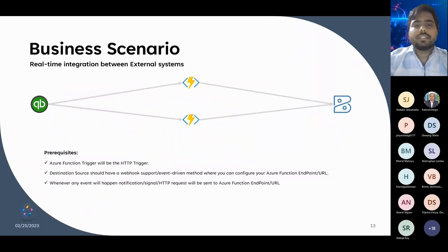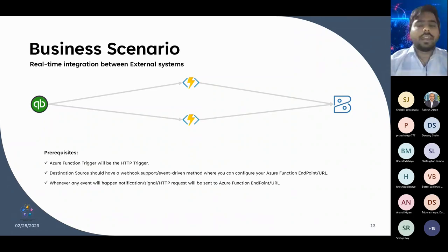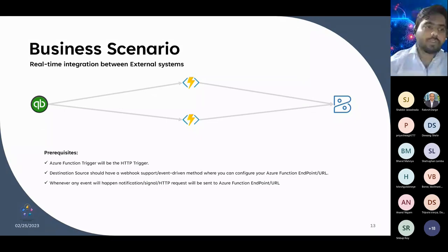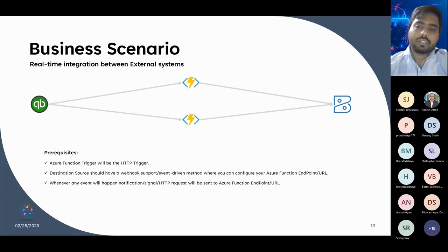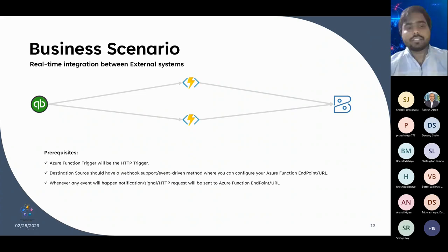The second business scenario: you don't have Dynamics, but you have two ERP systems that support webhooks. They are present with different legal entities but want to sync invoices or sales entities between both systems. You can have two Azure Functions between them - whenever QuickBooks makes any changes, it sends a request to Azure Function one, which processes all the data from QuickBooks and sends it to Zoho Books. The same is done vice versa: whenever there are changes in Zoho Books, it notifies the Azure Function, which takes the data from Zoho Books using the API and sends it to QuickBooks. This makes the data synchronous between both systems.